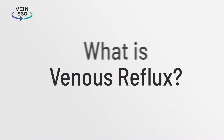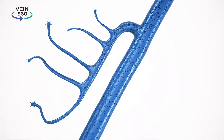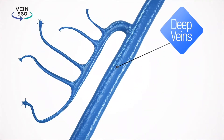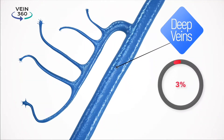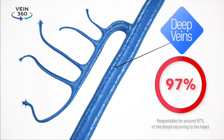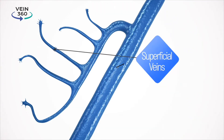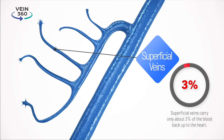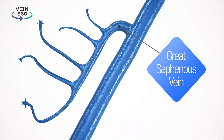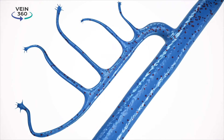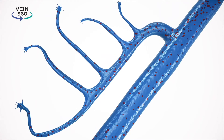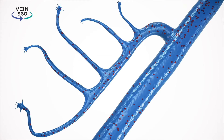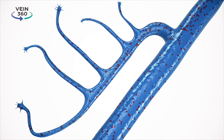So what is venous reflux? In your legs, you have two sets of veins. The deep veins are much larger than superficial veins and are responsible for around 97% of the blood returning to the heart. The superficial veins are the veins just beneath the skin surface. They are less important and carry only about 3% of the blood back to the heart. The most important and largest superficial vein is the saphenous vein. In healthy veins, blood is flowing in an orderly fashion from the small superficial veins into the saphenous vein and then into the larger deep veins and up to the heart.